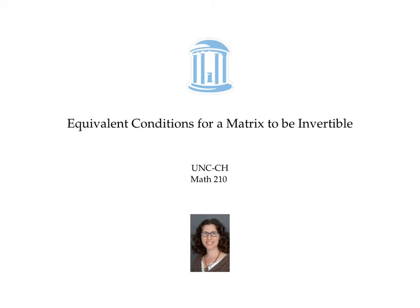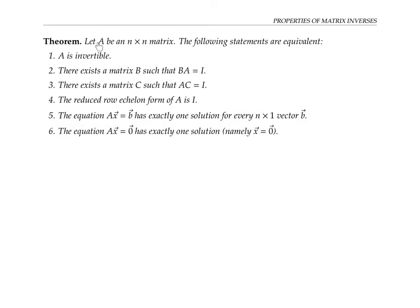This video gives a bunch of different ways of saying that a matrix is invertible. Let A be an n by n matrix. Recall that we say A is invertible, by definition, that means there exists an n by n matrix...